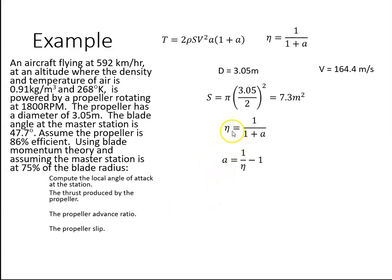The efficiency η is equal to 1/(1+a), so rearranging, a equals 1/η minus 1. We were given the efficiency as 86%. If I substitute that in, a works out to be 0.163.